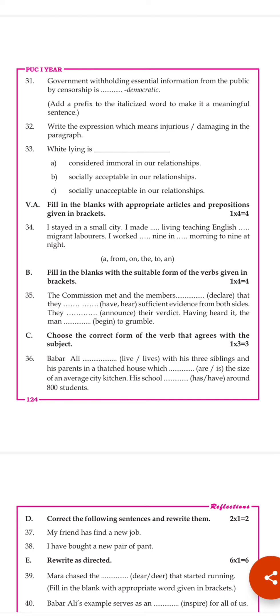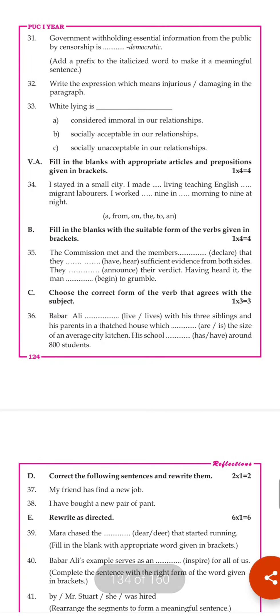Having heard it, the man 'begin' became 'began' to grumble. So remember: the first sentence in the question is always a clue. If it is the past, all the verbs use past tenses. If it is the present, all present tenses. If it is the future, all future tenses. To summarize: 'declare' becomes 'declared,' 'have heard' becomes 'had heard,' 'announced' stays 'announced,' and 'begin' becomes 'began to grumble.'